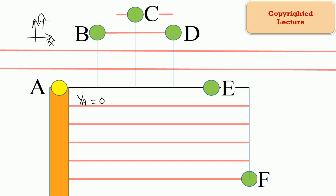Positive y is defined as vertically up. Positive x is defined as to the right. The position of point A is equal to 0. The position of point B is 5, 10, 15 — so it is 15 meters. The position of point C is 5, 10, 15, 20 — so 20 meters.